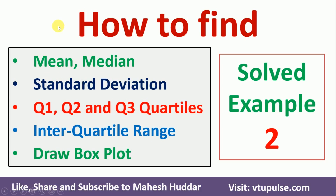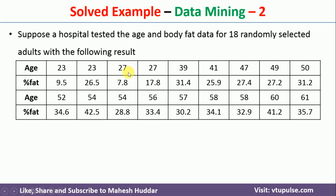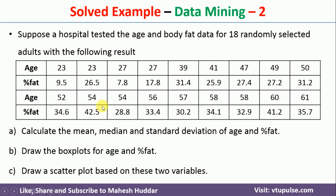Welcome back. In this video I will discuss how to find mean, median, standard deviation, Q1, Q2, Q3 quartiles, and interquartile range. Also I will discuss how to draw a box plot. In this case we have been given data of 18 randomly selected adults — the age and body fat — and we need to find out all these particular measures.